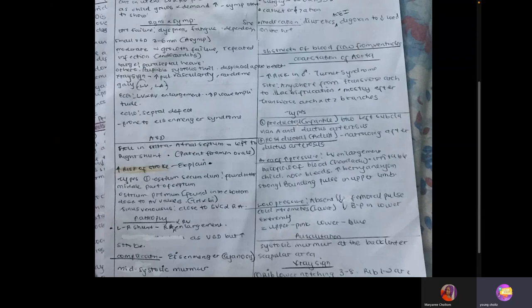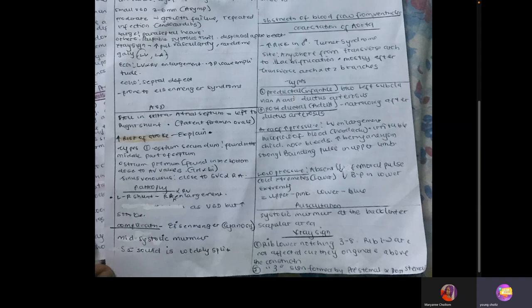Coarctation of aorta falls under obstruction of blood flow from the ventricles. There is increased risk in males and in patients with Turner syndrome. Types are pre-ductal (infantile type), located between the left subclavian artery and ductus arteriosus, and post-ductal, located after the ductus arteriosus.